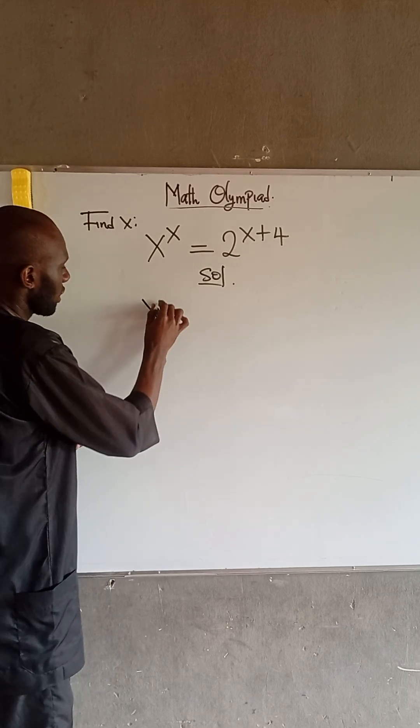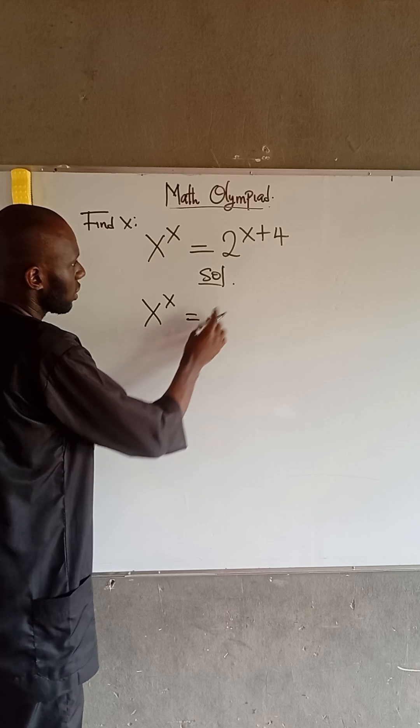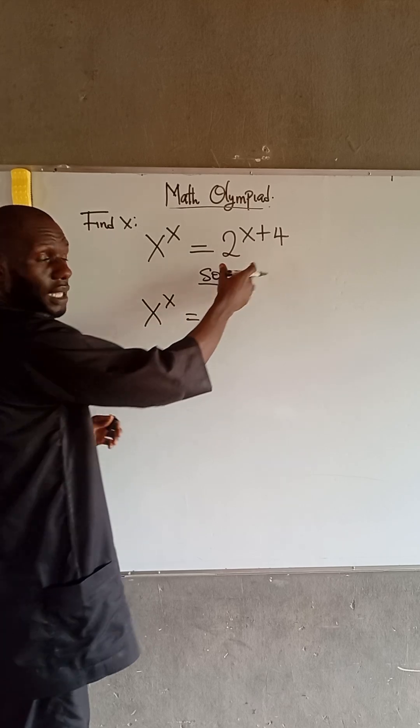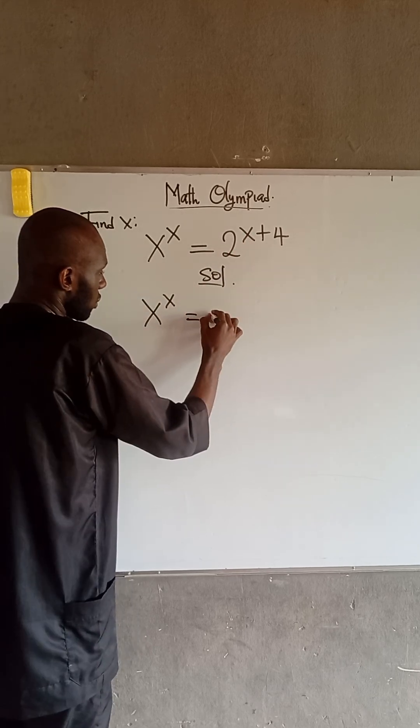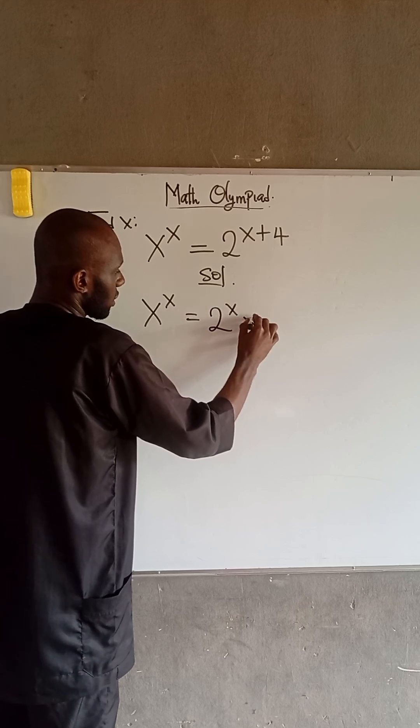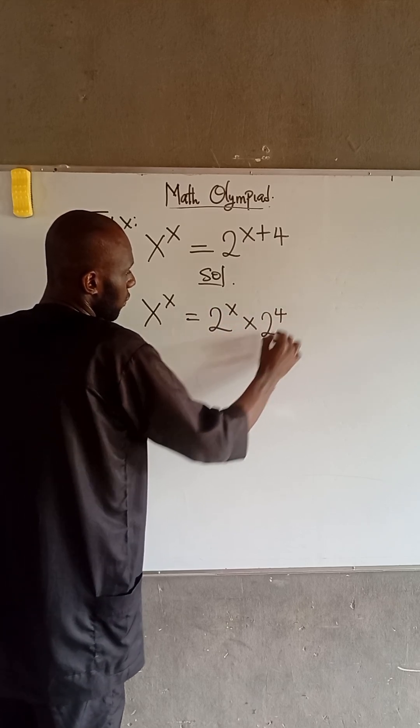So, we have that x to the power of x is equal to... Now, at the right-hand side, we can apply the law of indices. So, this becomes 2 to the power of x times 2 to the power of 4.